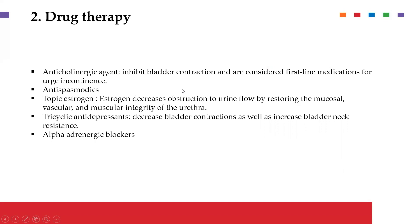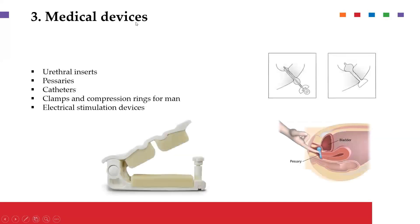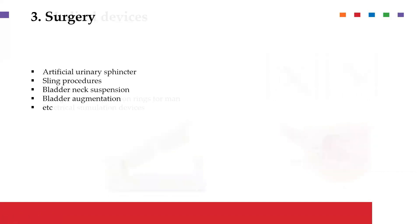For drug therapy, we use anticholinergic agents, which inhibit bladder contraction and thereby reduce incontinence. Other drugs include antispasmodics, estrogen, antidepressants, and alpha-adrenergic blockers. Medical devices used to block the urinary pathway include pessaries inserted vaginally to indirectly support the sphincter, as well as catheters, clamps, and urethral inserts. Surgical interventions may include bladder neck suspension, bladder augmentation, and insertion of an artificial urinary sphincter.